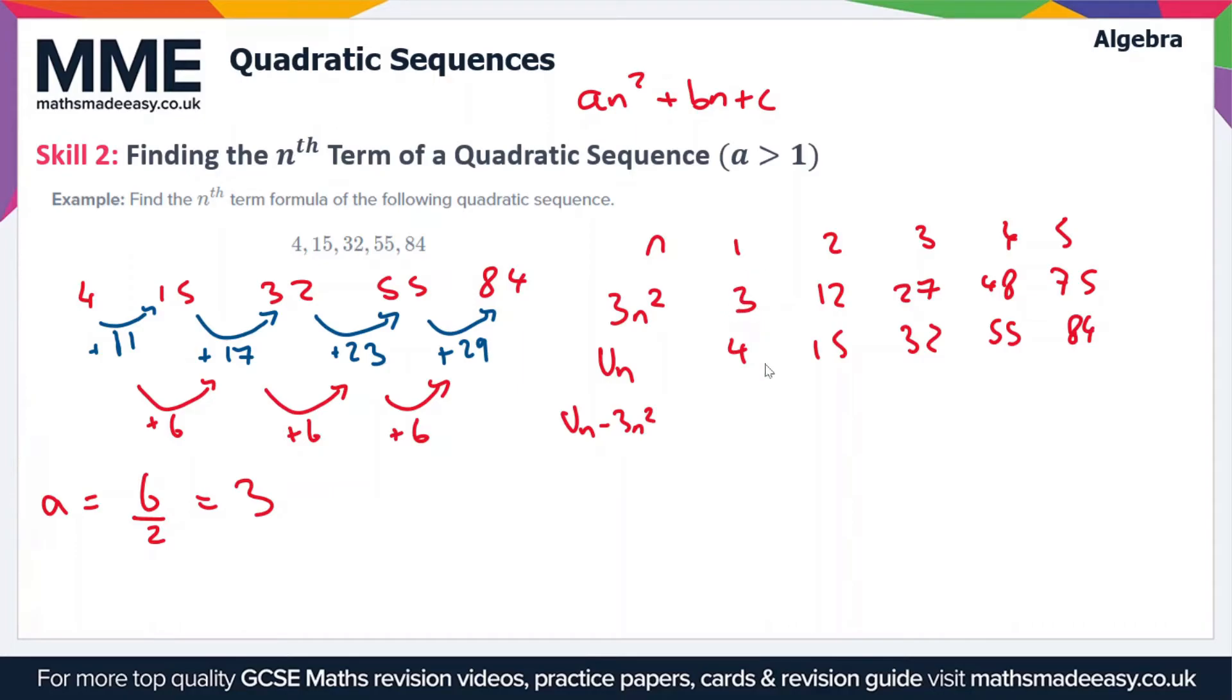So for the first value is 4 minus 3, that's 1. Then we've got 15 minus 12, which is 3. 32 minus 27, that's 5. 55 minus 48 is 7. And 84 minus 75 is 9. So now this last line of the table here is a linear sequence.